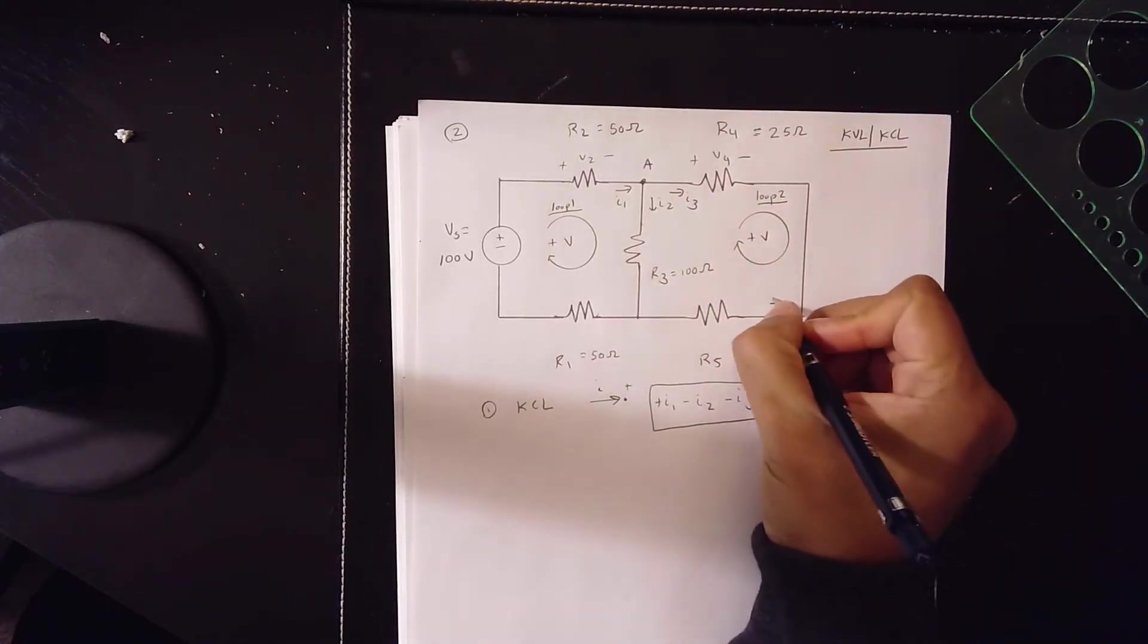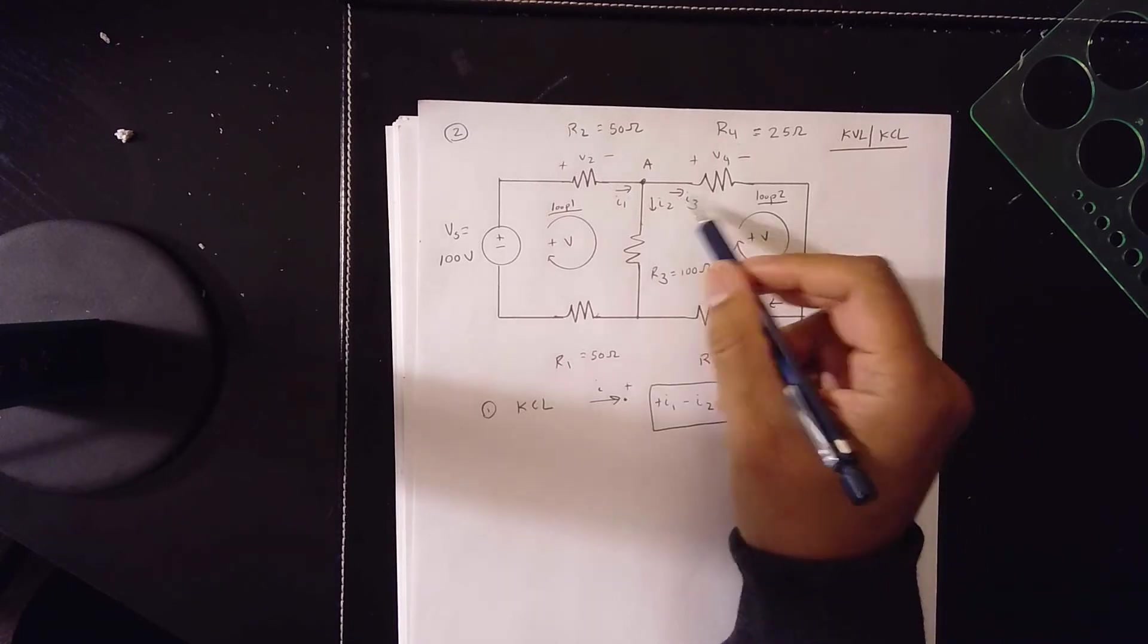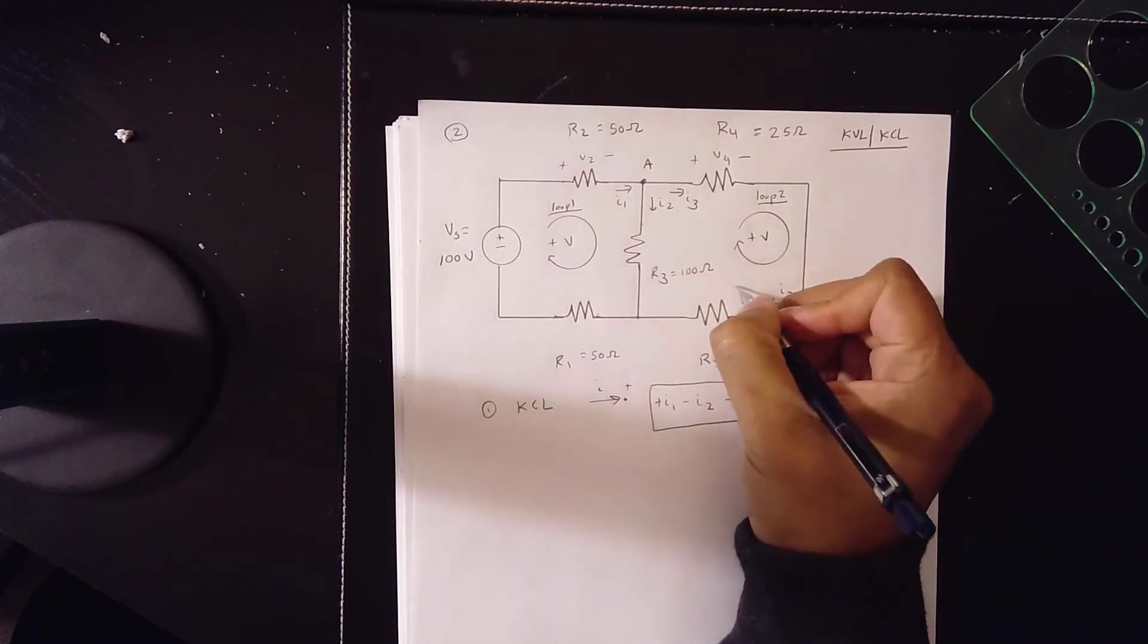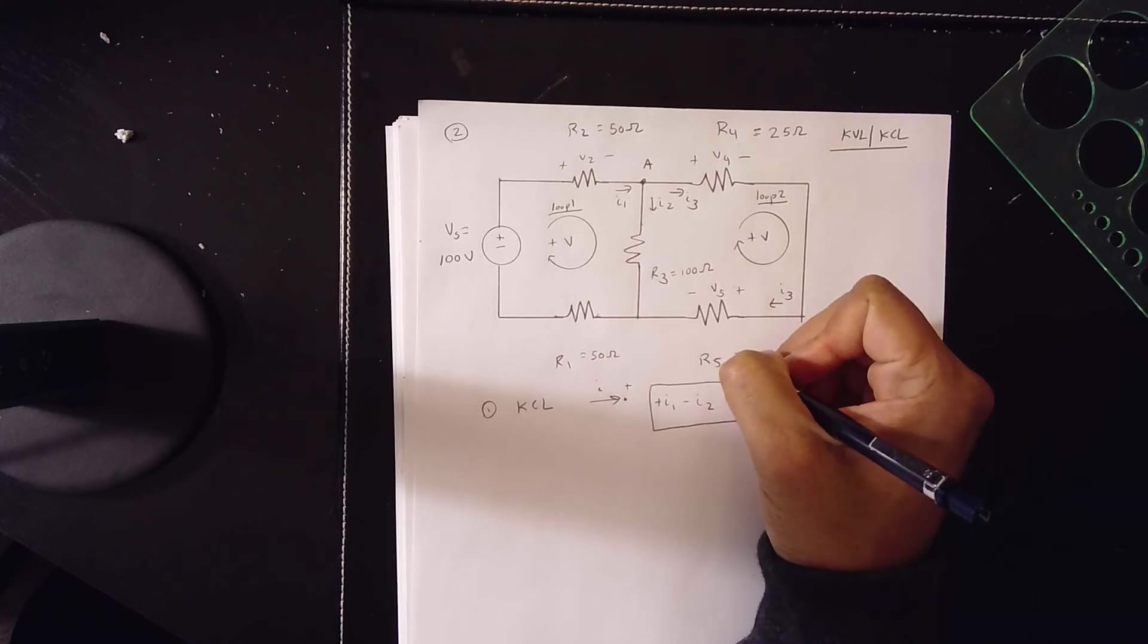And as the current moves down, I3 is going down, it's coming here, and induces a voltage V5 to match this resistor five.